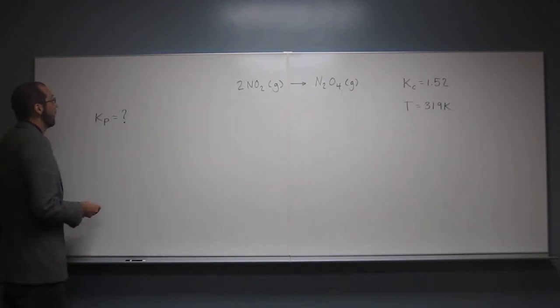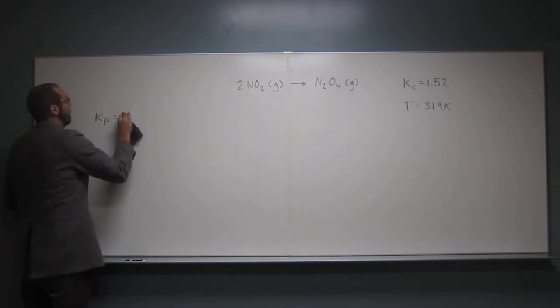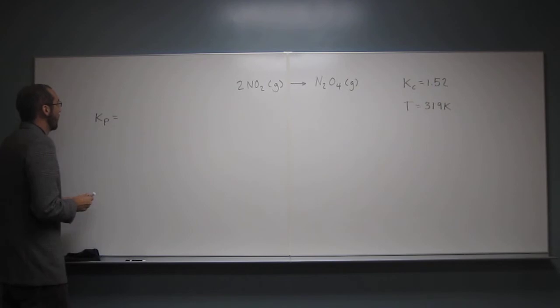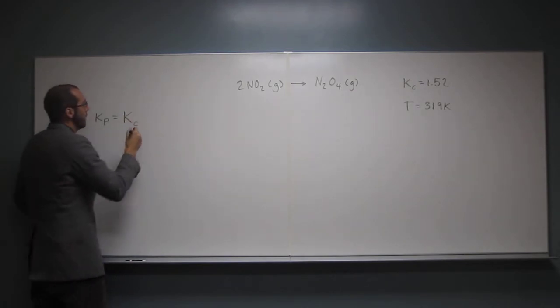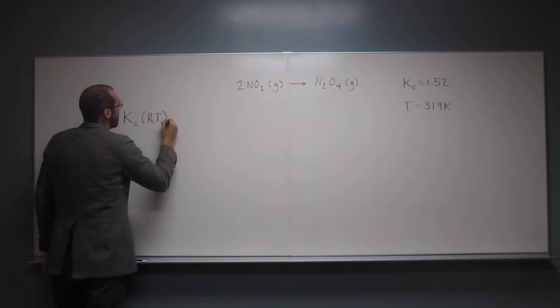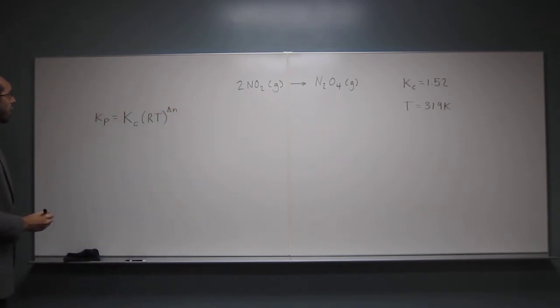OK, so the first thing you want to do, or the best thing, is that you remember the Kp to Kc equation. If not, you're going to have a hard time doing this problem. So Kp equals Kc times RT to the delta N. So what are these things?